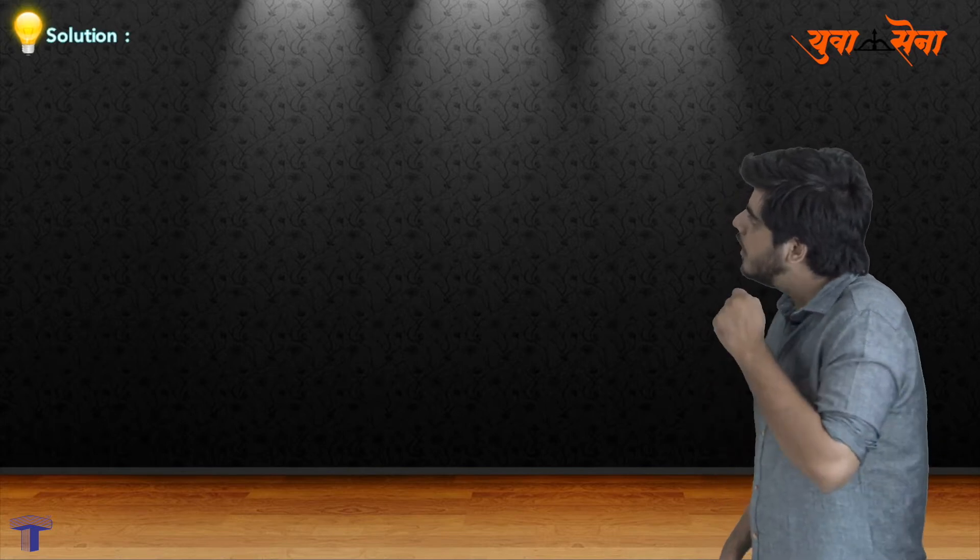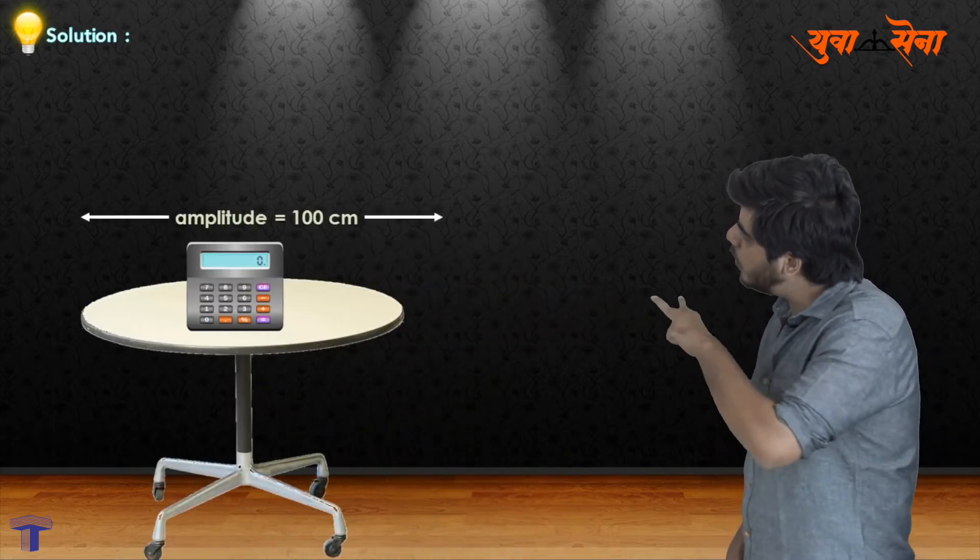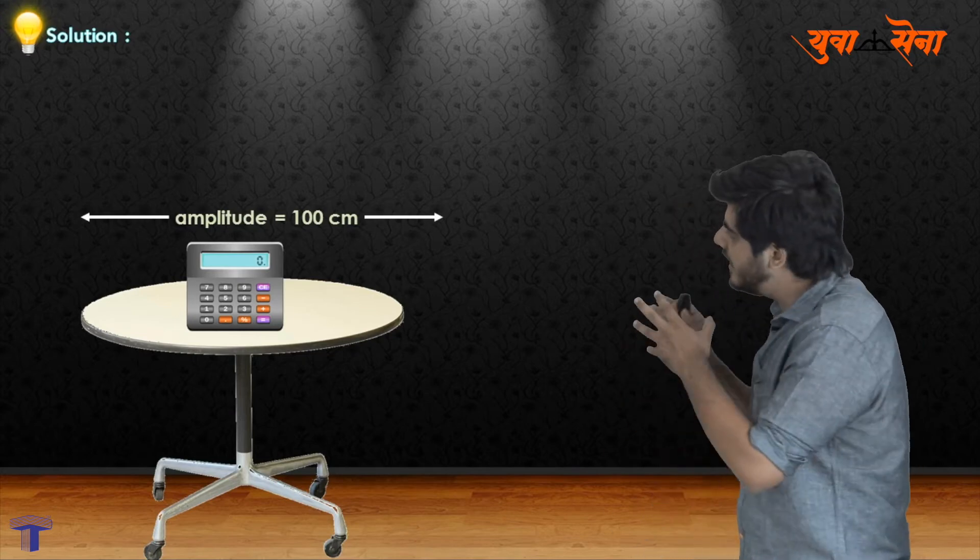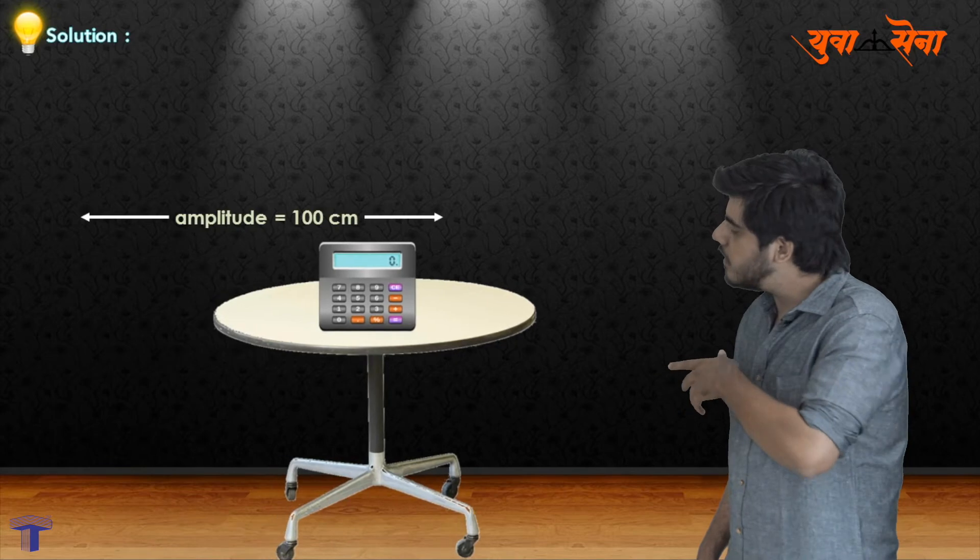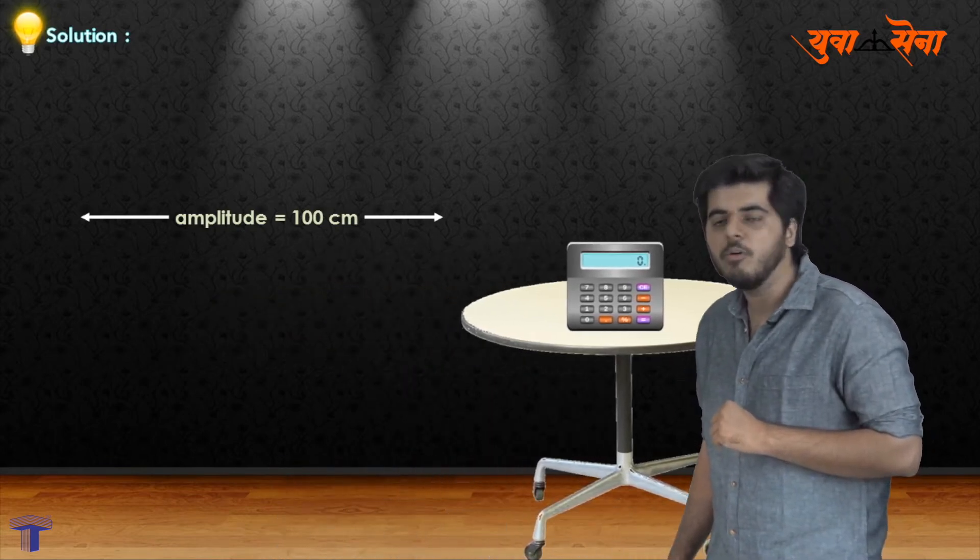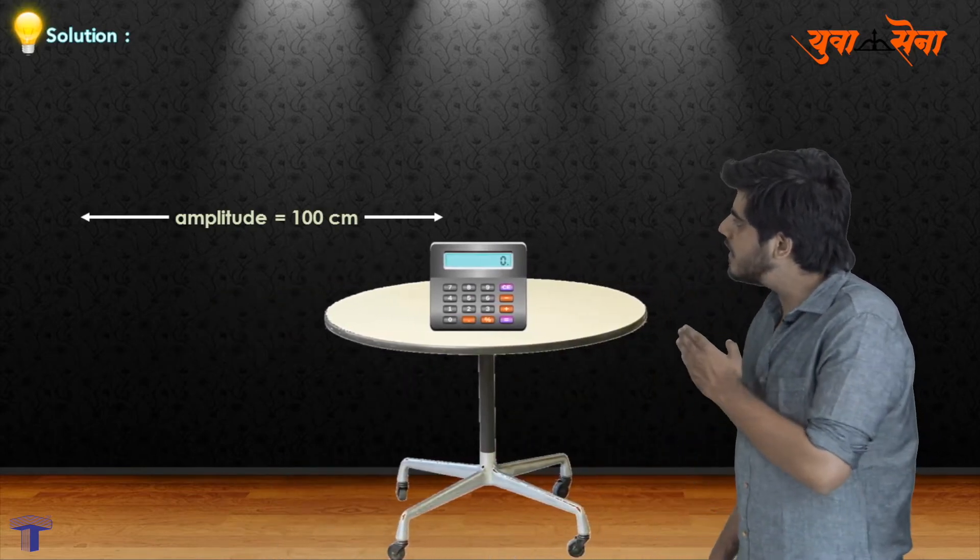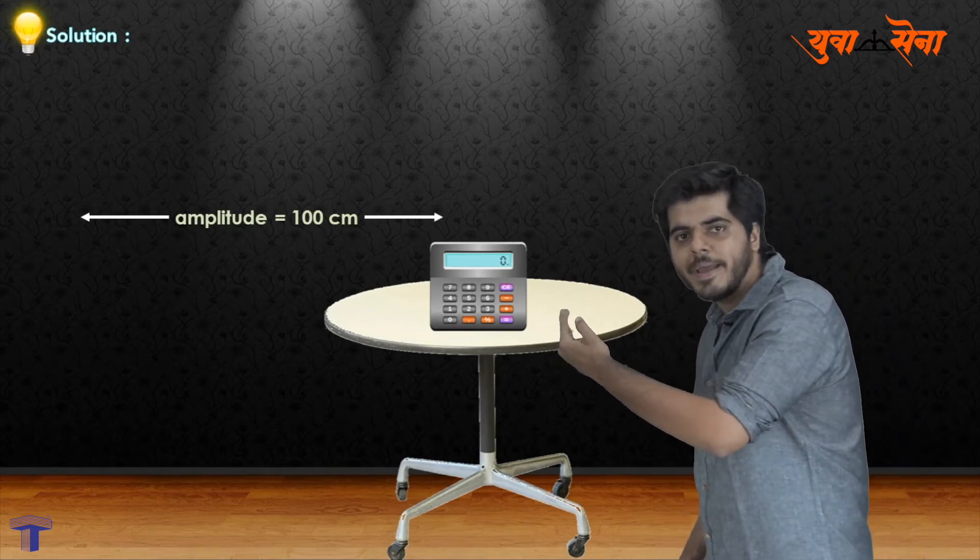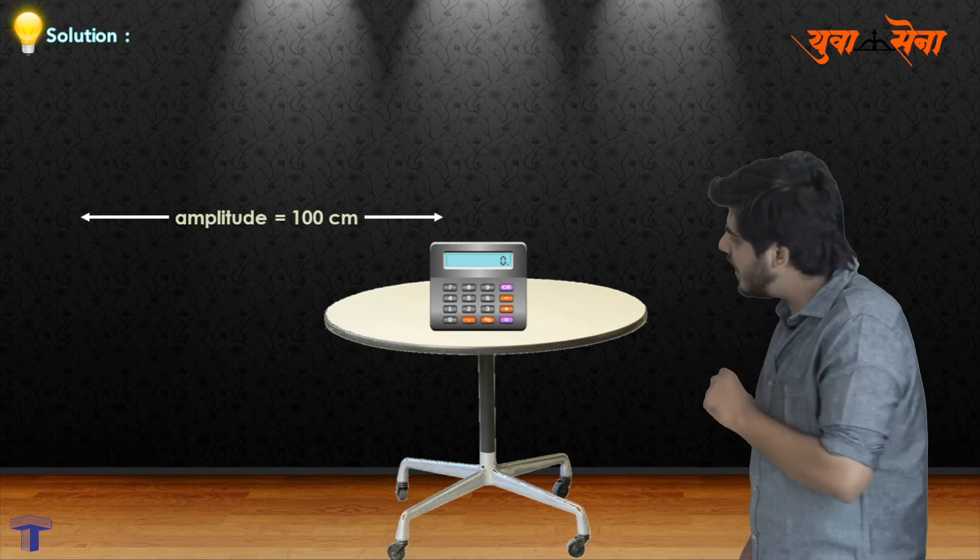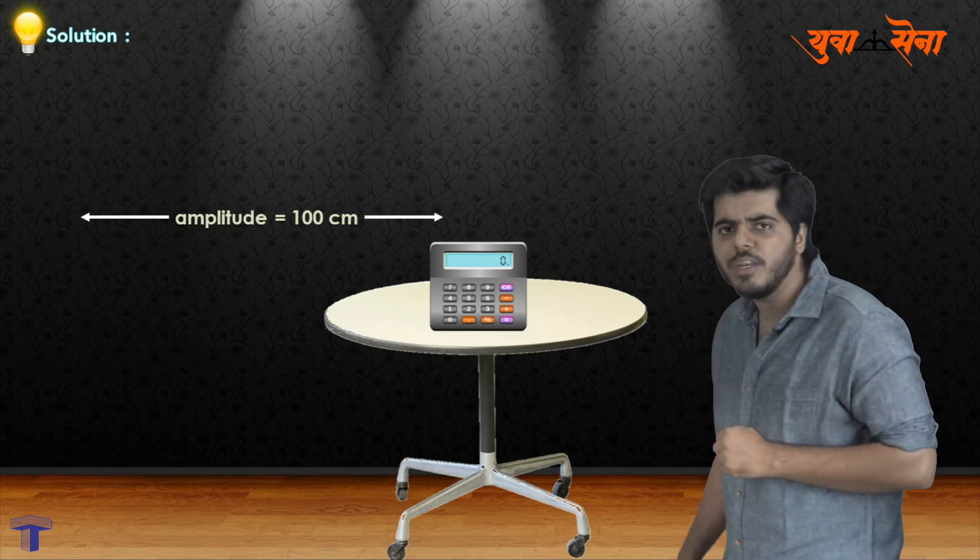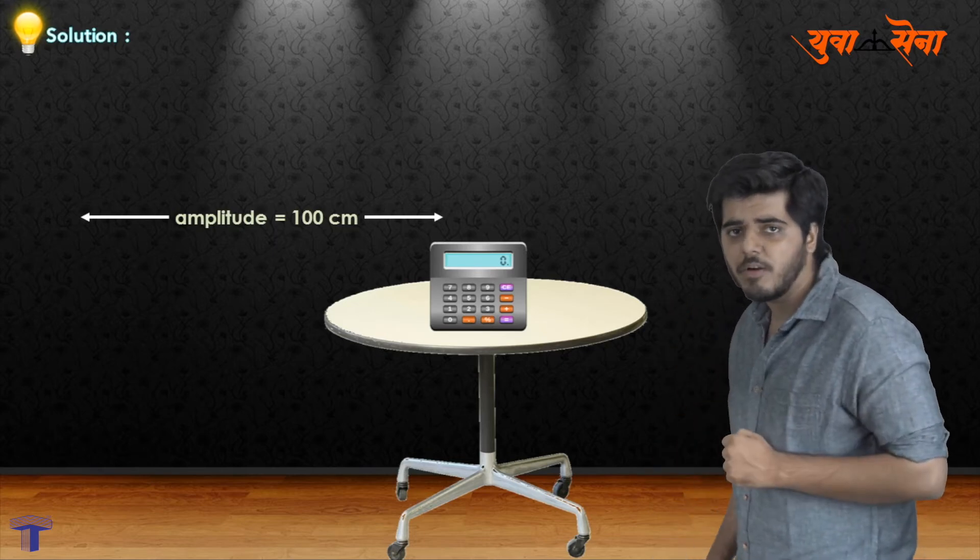Let us see our solution. We are going to consider a table with maximum amplitude of 100 centimeters. The table undergoes simple harmonic oscillation, moving from mean position to extreme position and back.